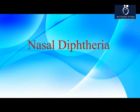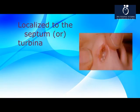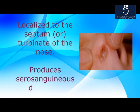Nasal diphtheria is uncommon and the mildest form. It is localized to the septum or turbinate of the nose and produces serosanguineous discharge.